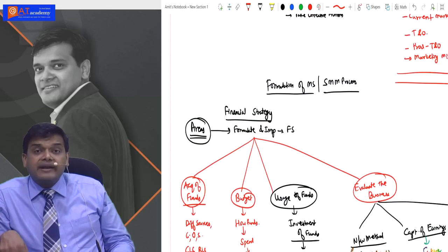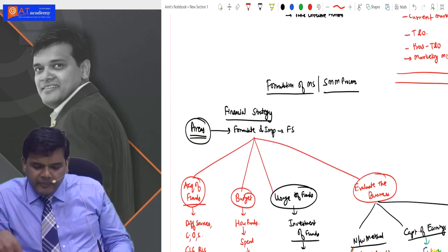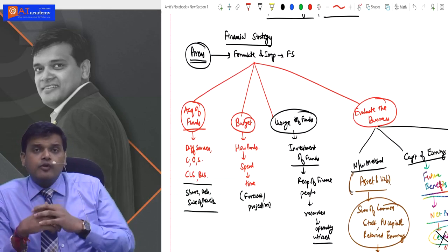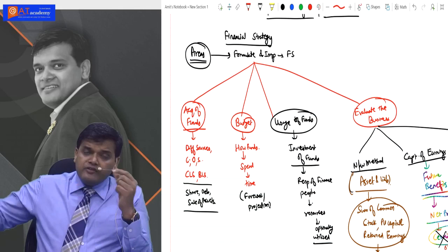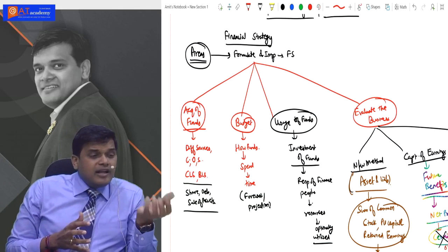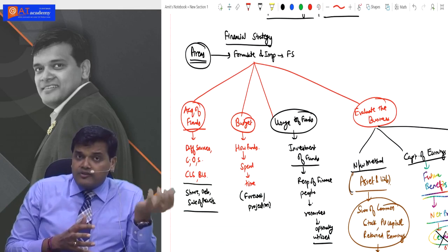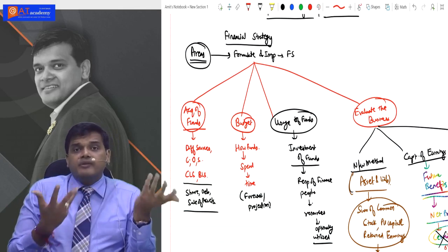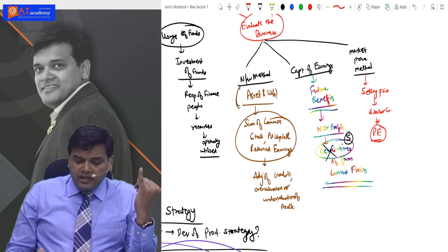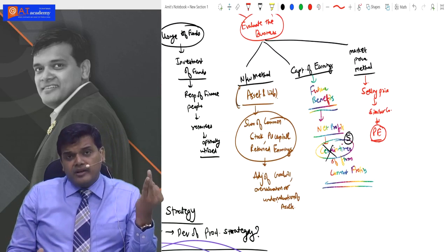After that, we discussed financial strategy. In financial strategy, there are four areas we should focus on: first, capturing funds, meaning sources of funds; second, preparing the budgets - where to spend; third, utilizing those funds and managing the utilization; and last, evaluating the worth of business. For evaluating business worth, we studied three methods: net worth method, capitalization of earnings method, and market price method.